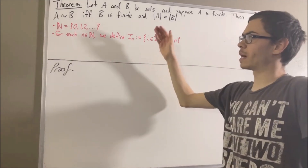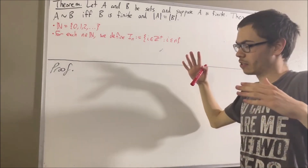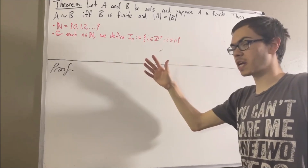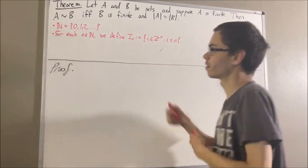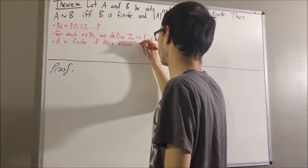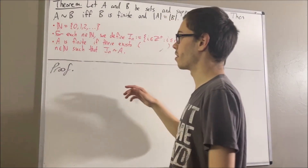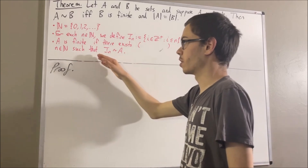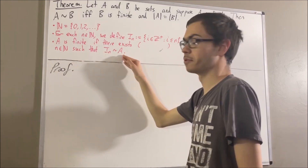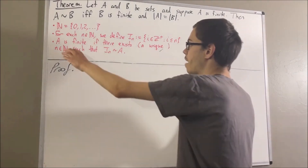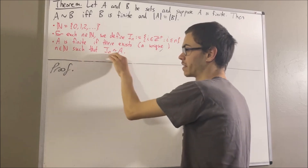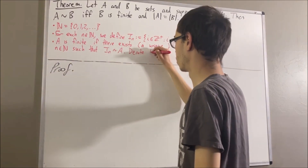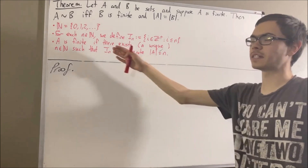Now let's talk about what we mean by a finite set. Given any set A, we say that A is finite if there exists a natural number n such that there exists a bijection from I_n to A. It turns out that this natural number n, which satisfies this condition, is unique — it's the only natural number such that we can have a bijection from this set to A. So every finite set can be assigned a unique natural number which satisfies this condition, and we call this natural number the number of elements in A, and we denote it like this. This is our notion of a finite set.